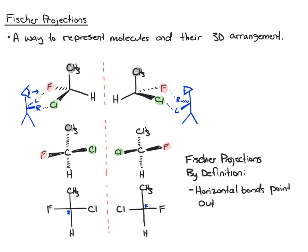On this, we have our horizontal bonds. We know, by definition, they point out towards you. A simple mnemonic for this, think about this almost like a bow tie. A bow tie, if it's on a person, it's horizontal. So that's what the horizontal bonds are.